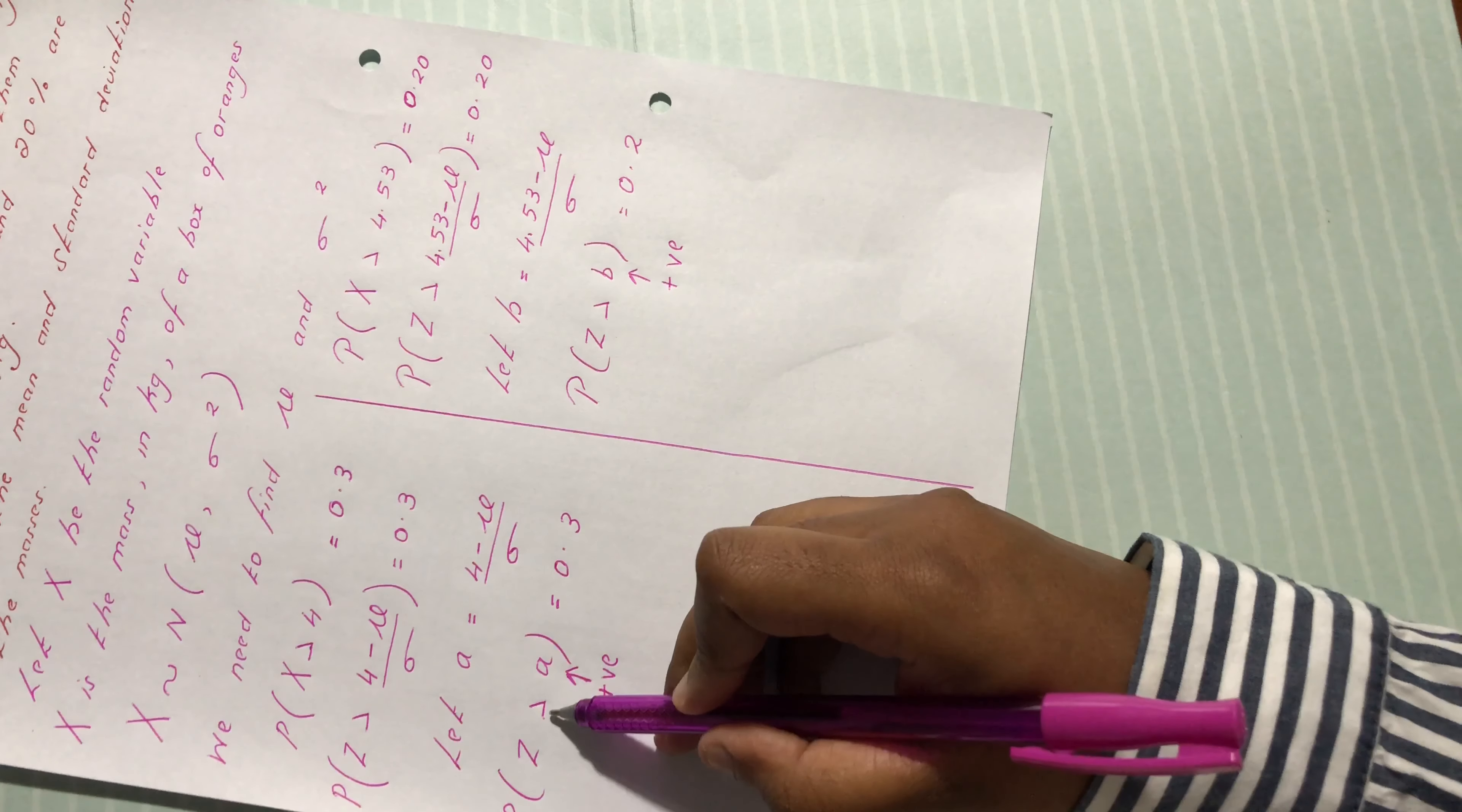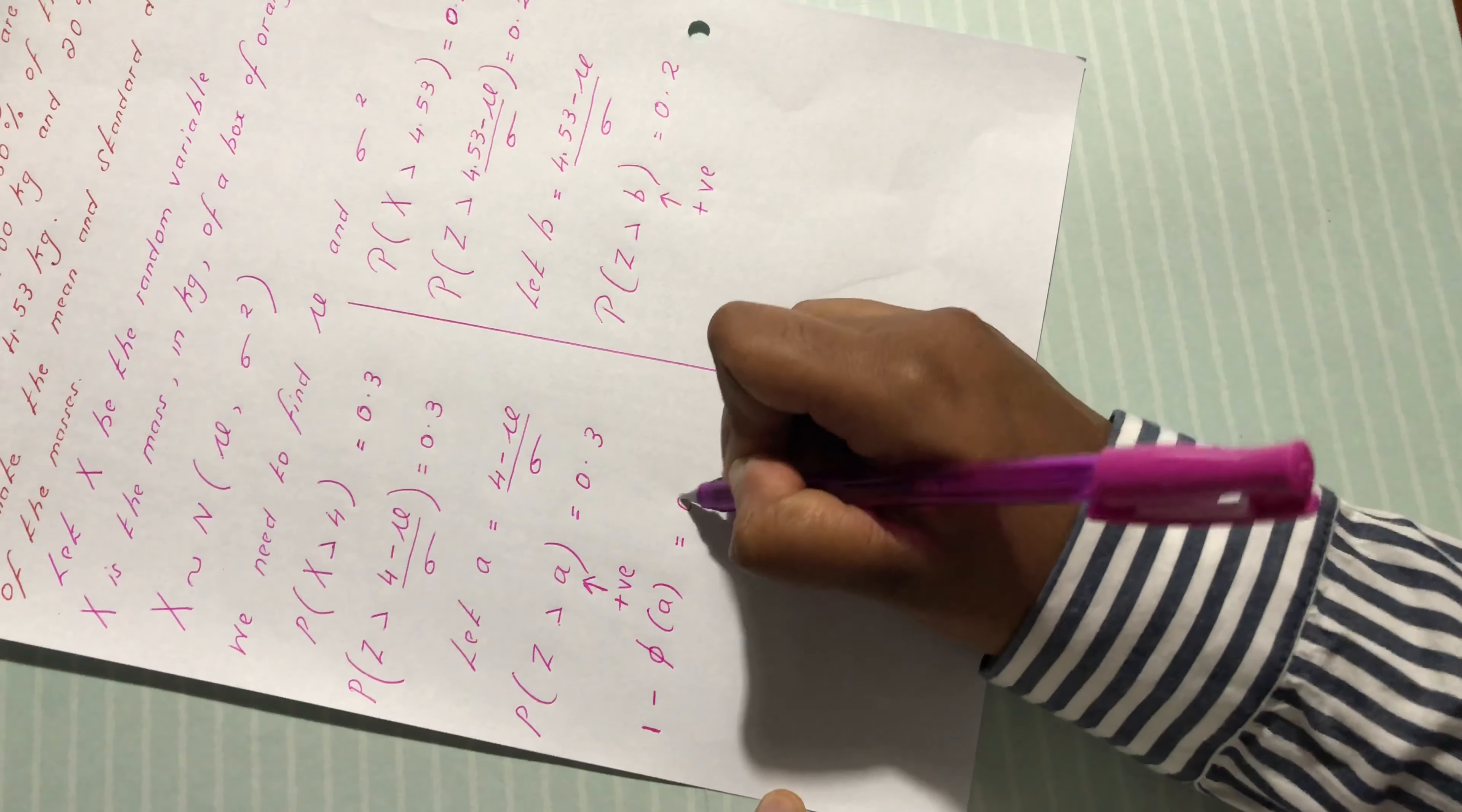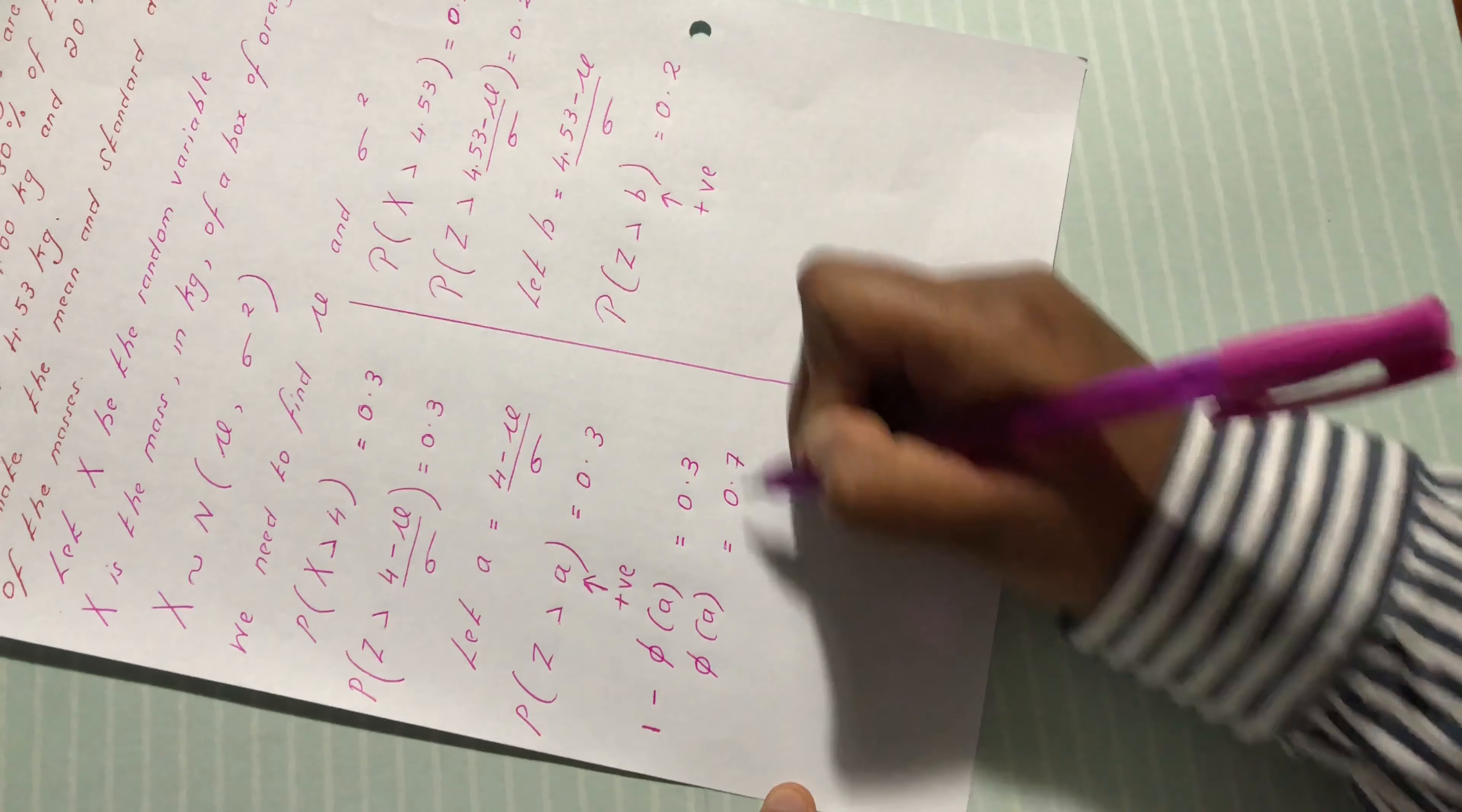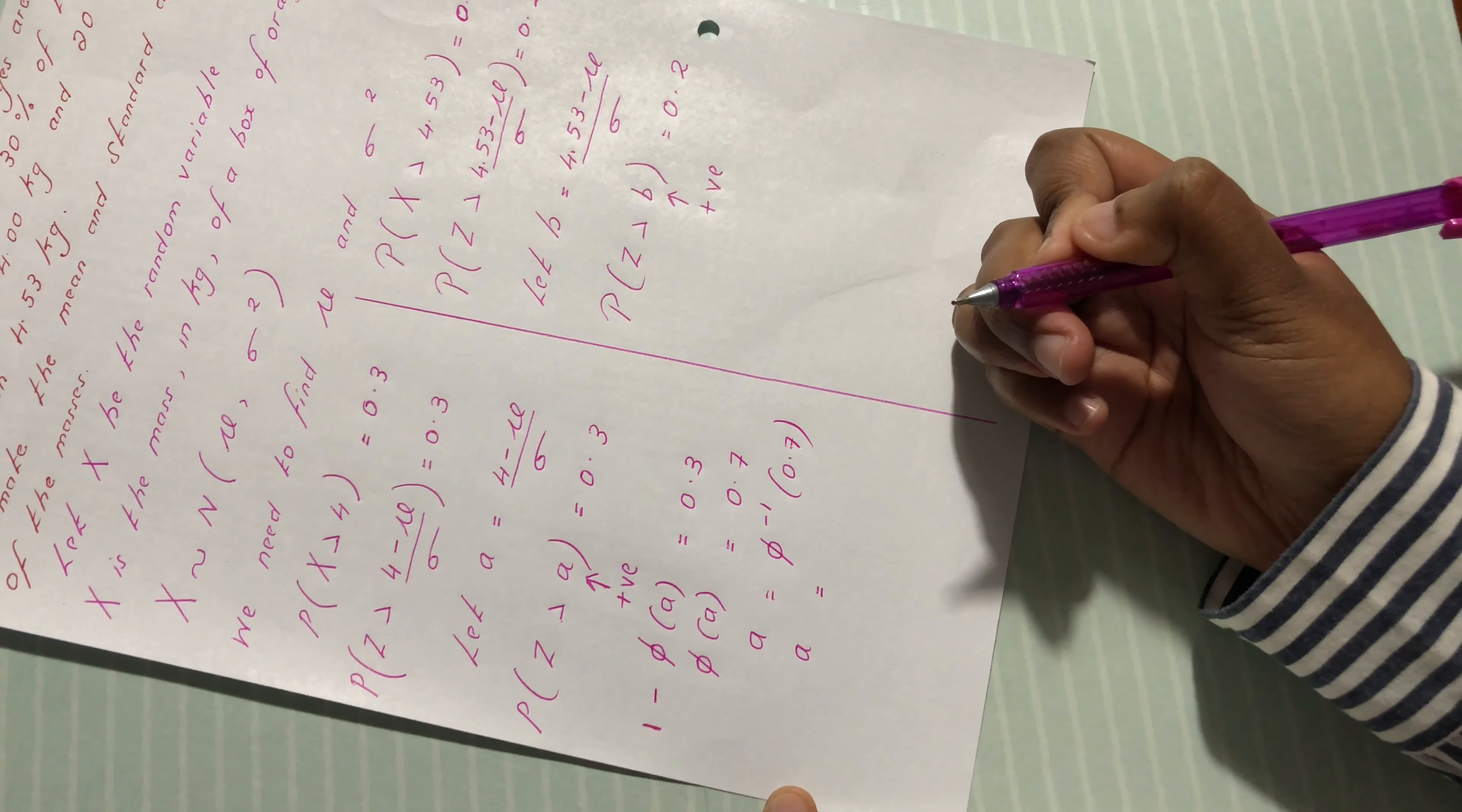Probability of z greater than a, a being positive, we have 1 minus phi of a equals 0.3. We make a subject of formula. Phi of a is equal to 0.7, so a is phi inverse of 0.7. We use the table in reverse to get a.